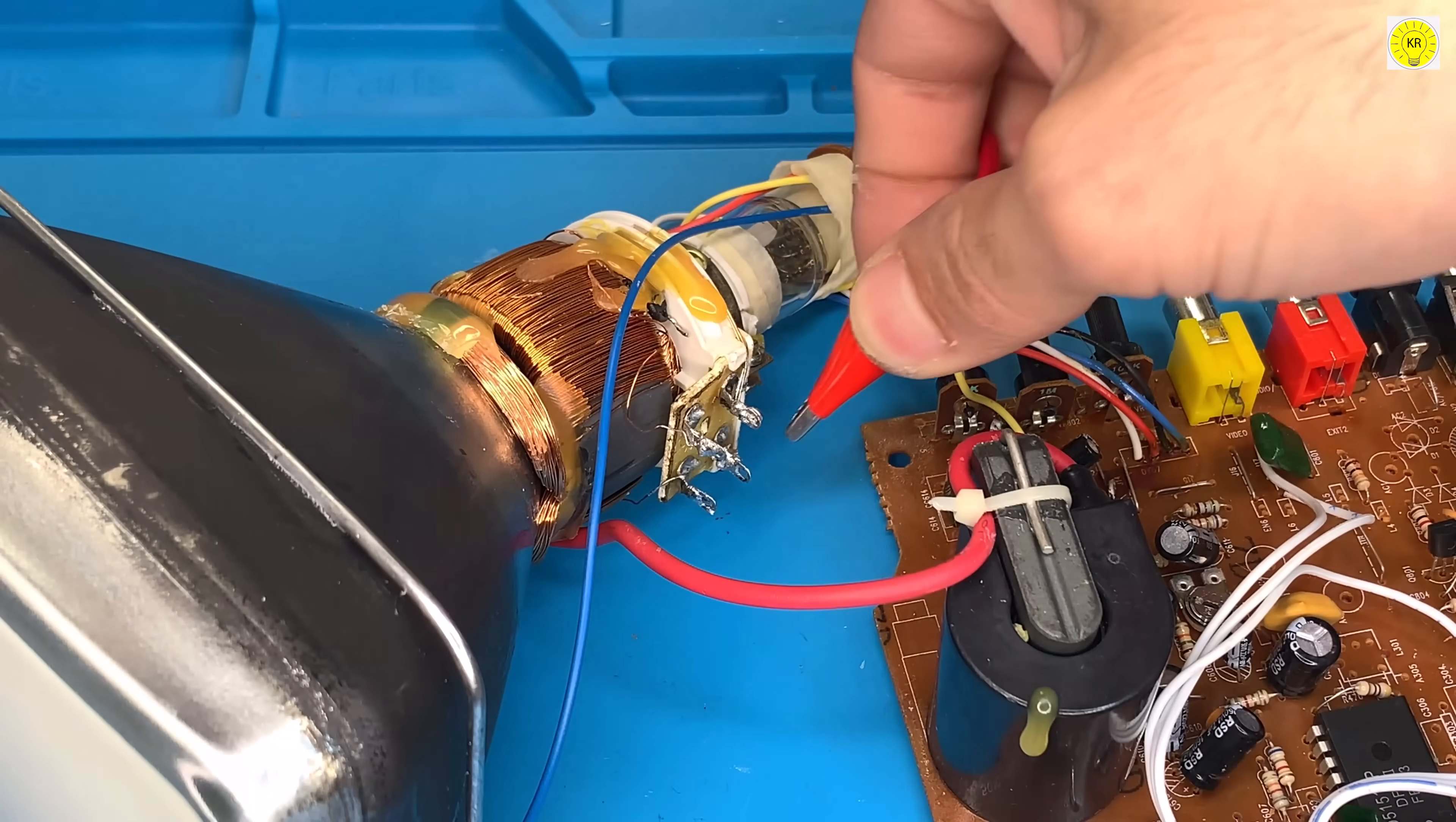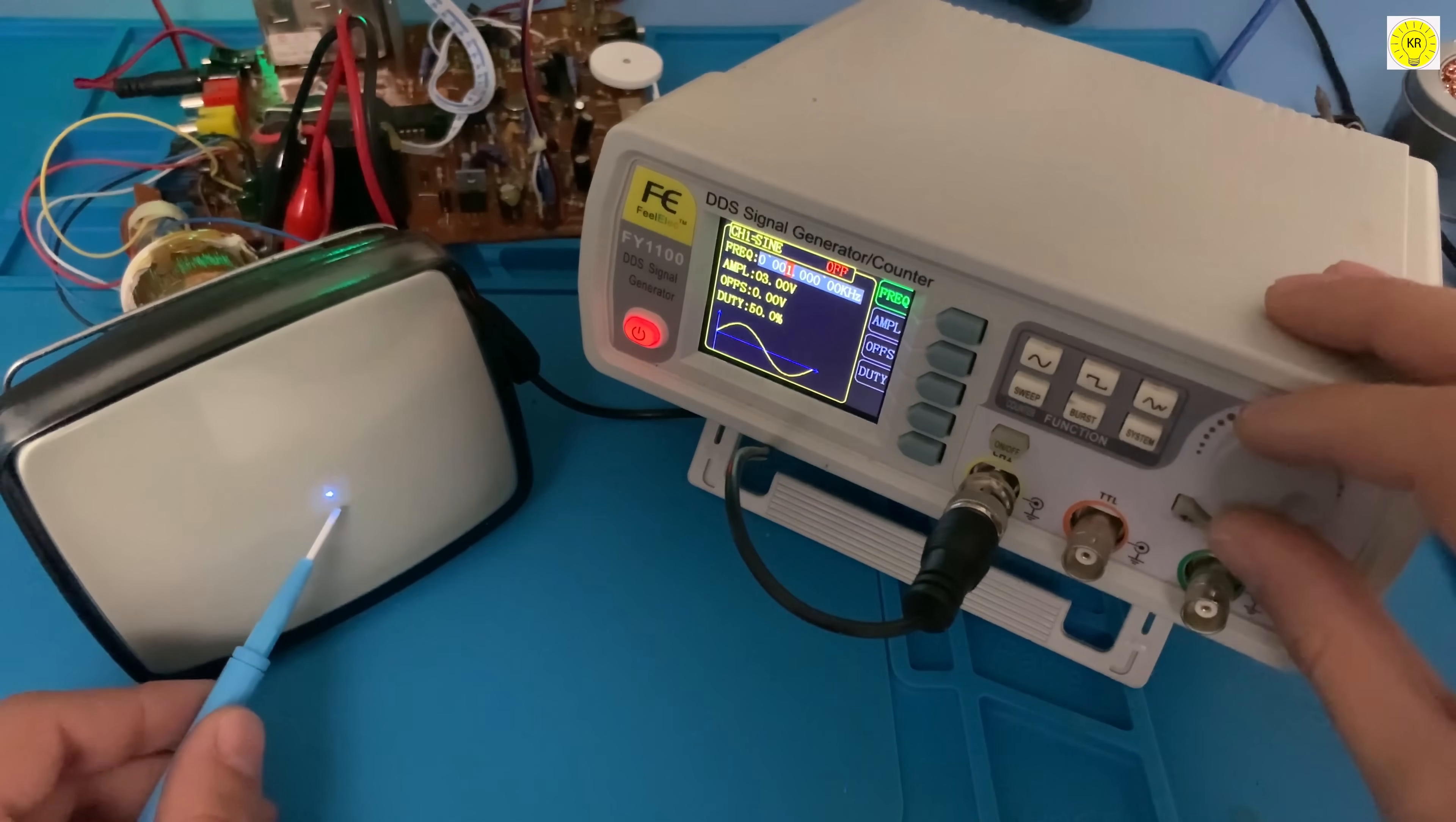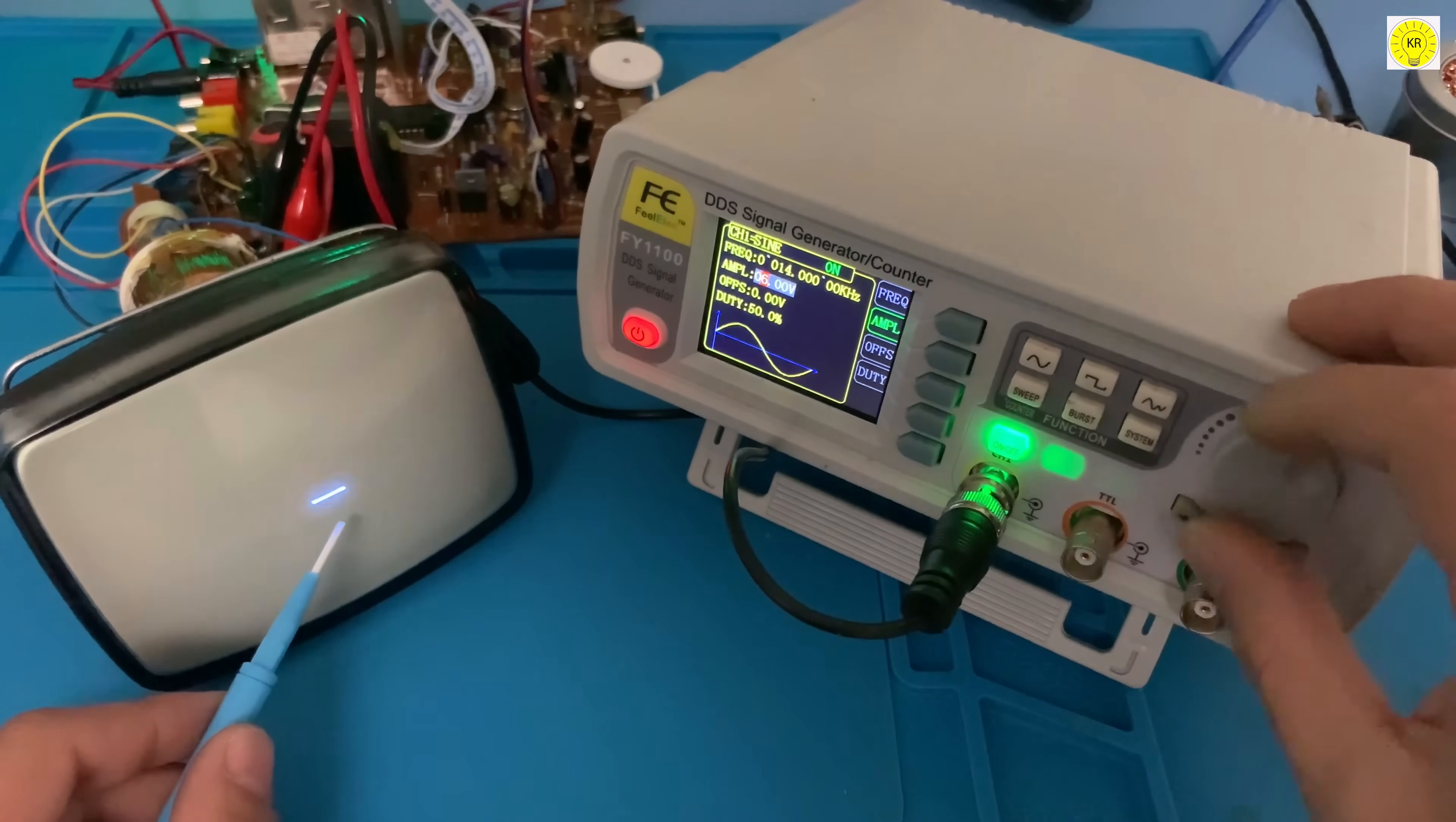We are now injecting a signal from the frequency generator into the vertical deflection coil. Now we set the frequency of the frequency generator around 14 kHz. We immediately notice the appearance of a change in the point that appears in the middle and changes according to the frequency or the voltage that we inject into the coil.